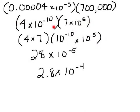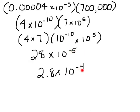Now this looks like what I've been working with. I take the 4 and the 7 out, multiply them, and I get 28. 10 to the negative 10th times 10 to the 5th — we're adding — so negative 10 and positive 5 is negative 5. Now 28 is not in scientific notation, so I'm going to have to move this one place to the left, which is — I'm sorry — a positive. So this ends up being 2.8 times 10 to the negative 5 plus 1, which is negative 4.